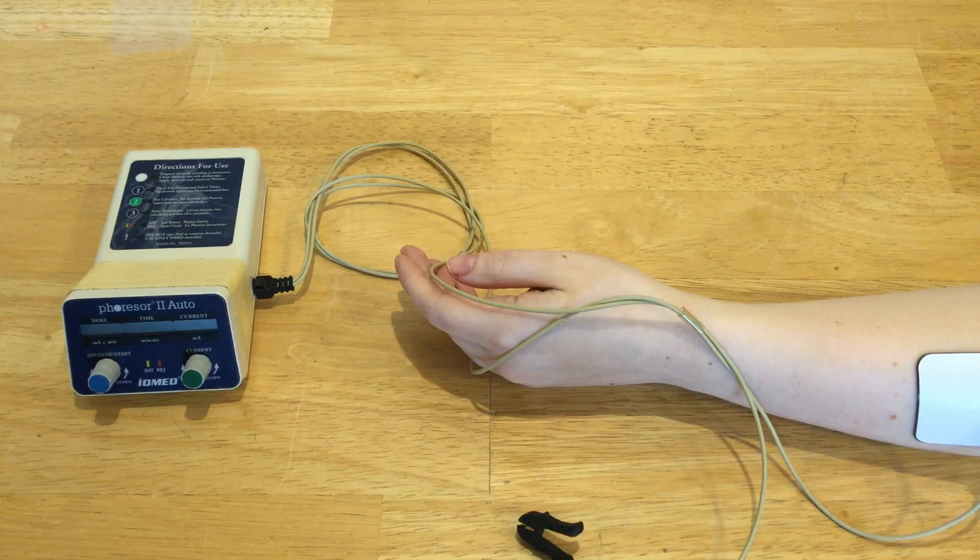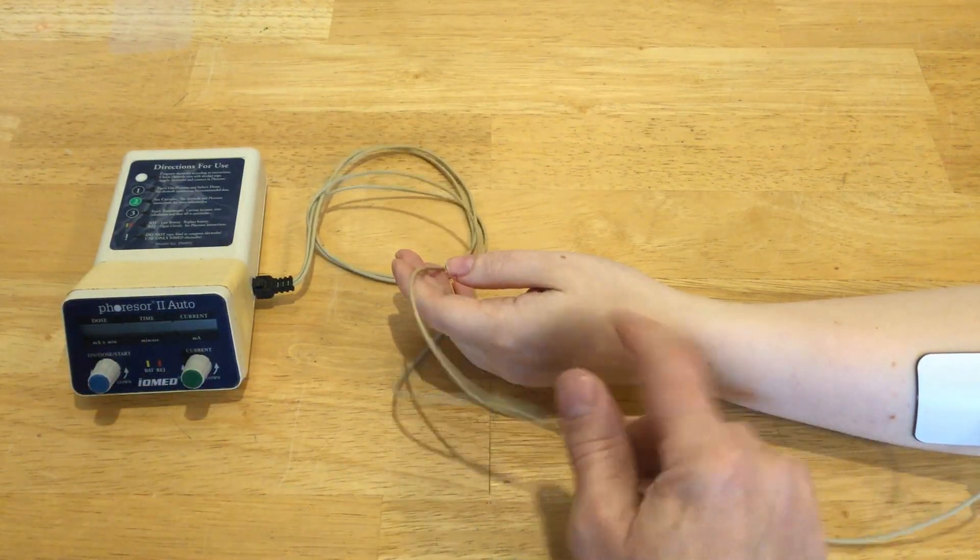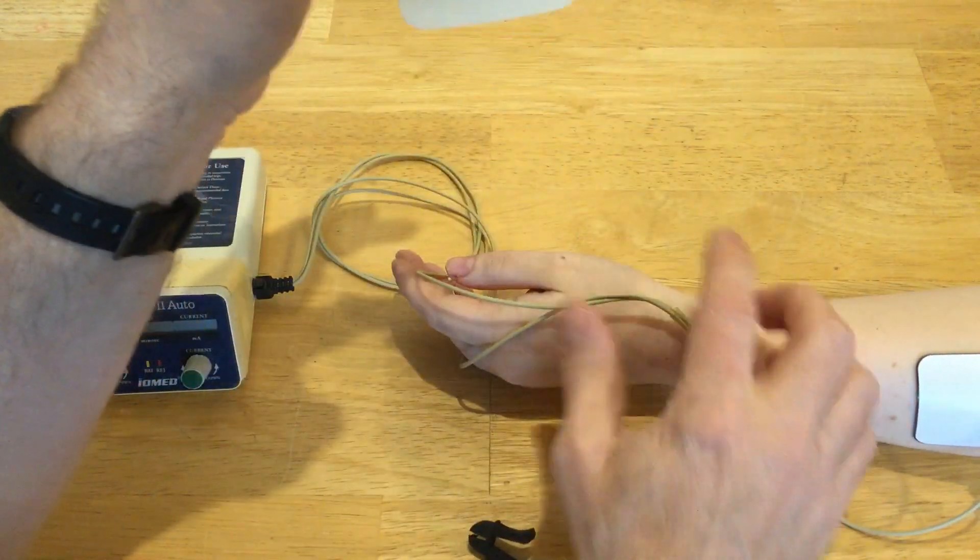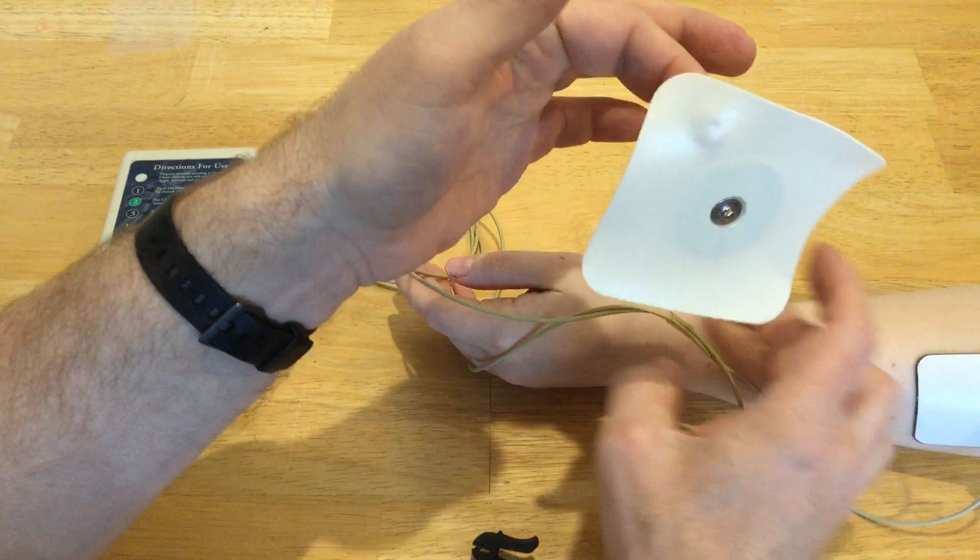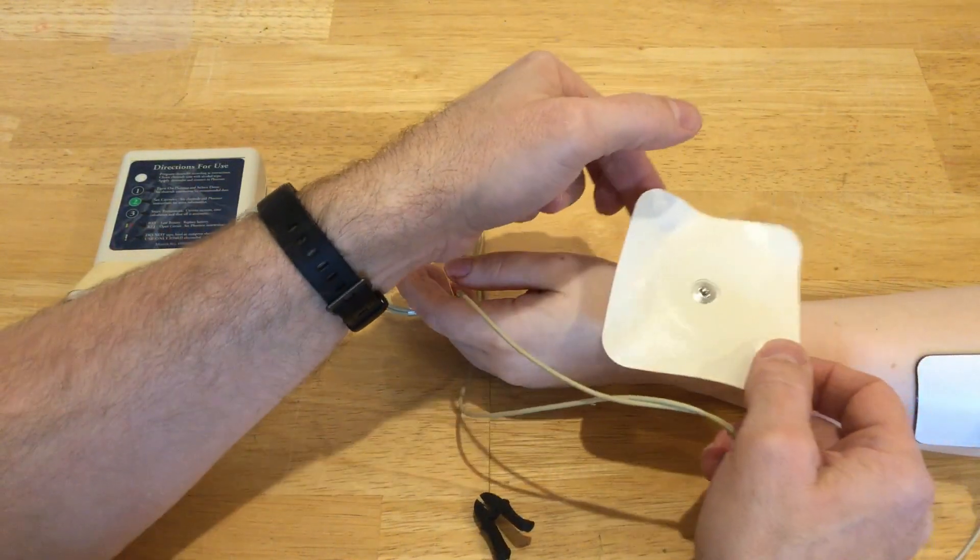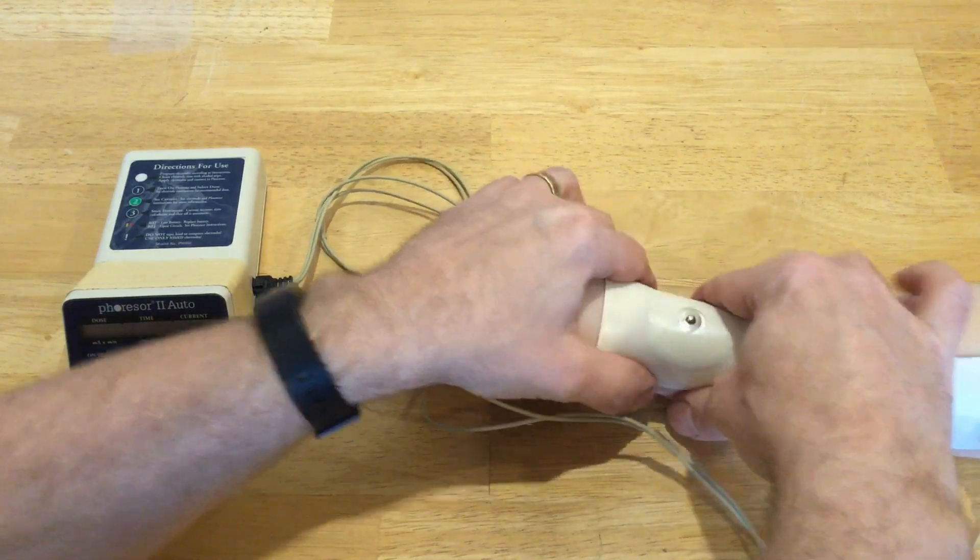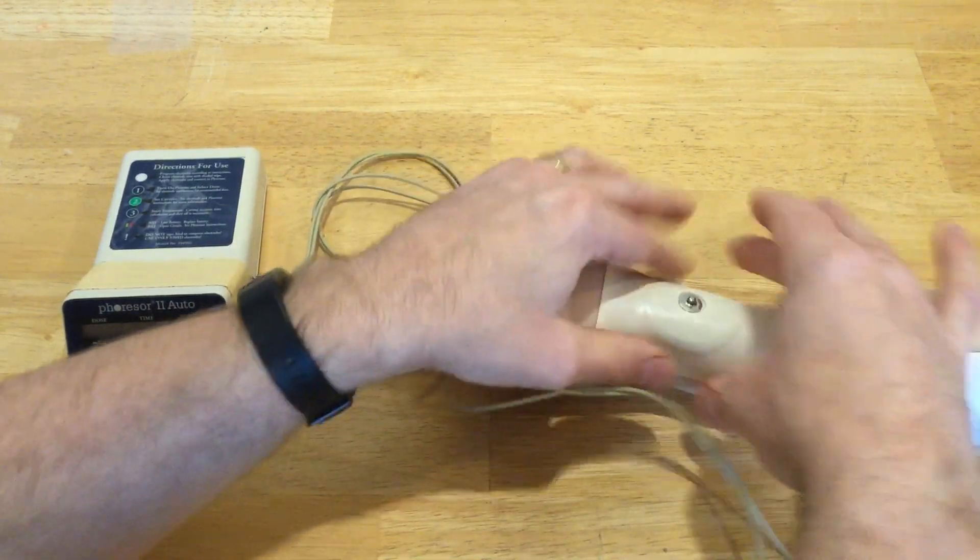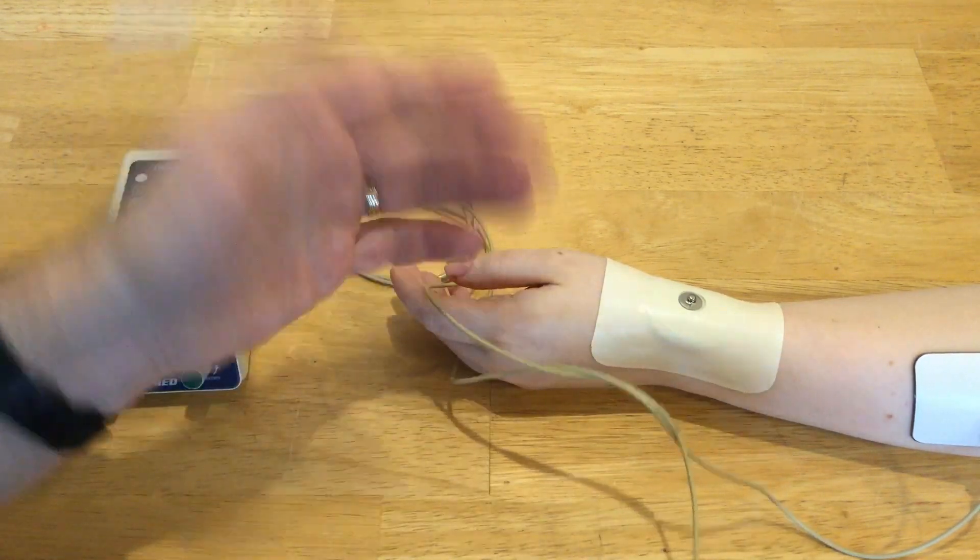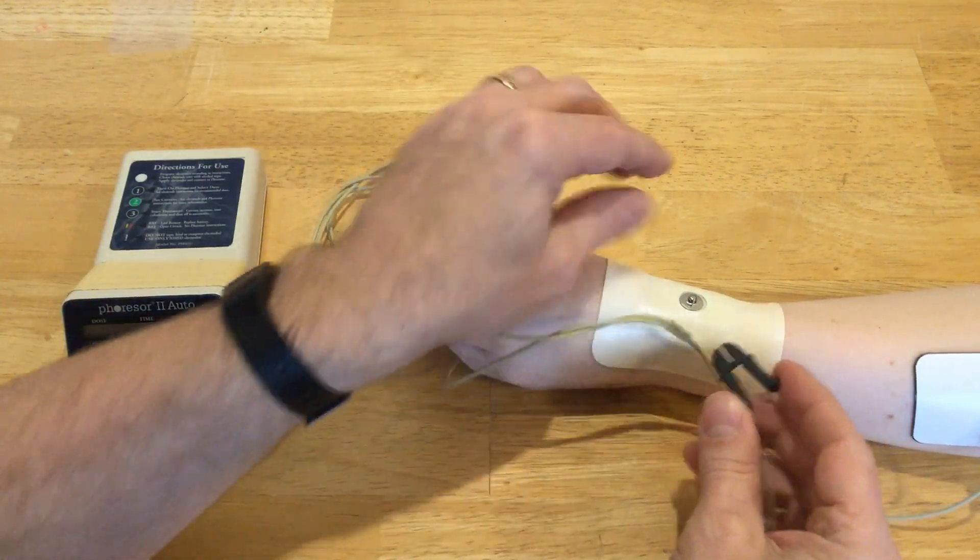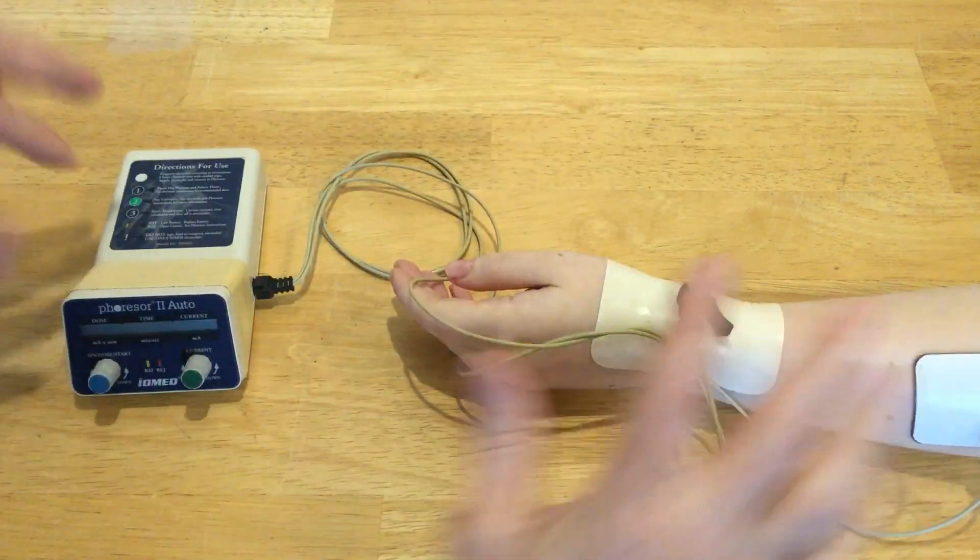If it's not directly over your target, you are not going to have the effect that you want. I'm going right here over that radial styloid so I can hit the first dorsal compartment. Again, I'm pretending this is a medication with a negative charge, so I'm going to apply the black electrode to my medication.